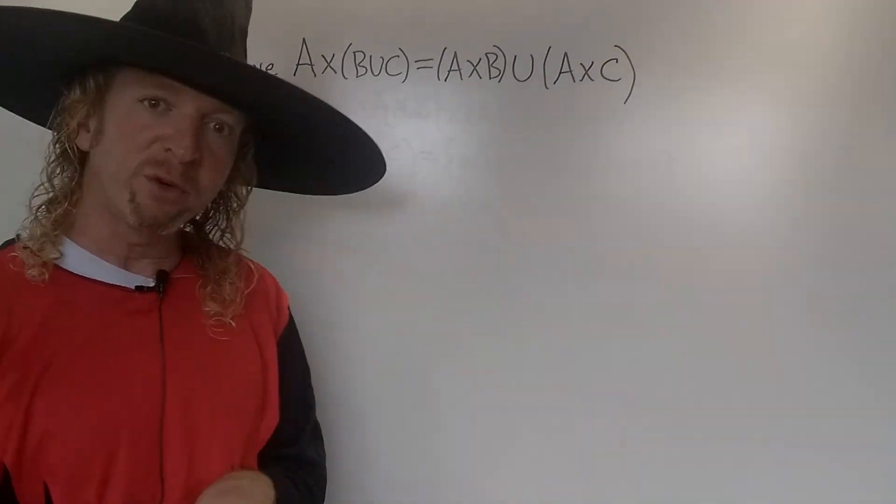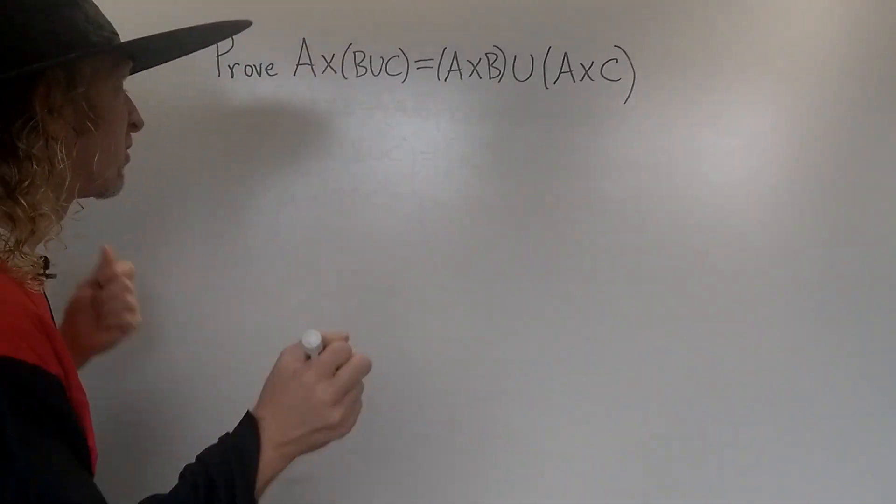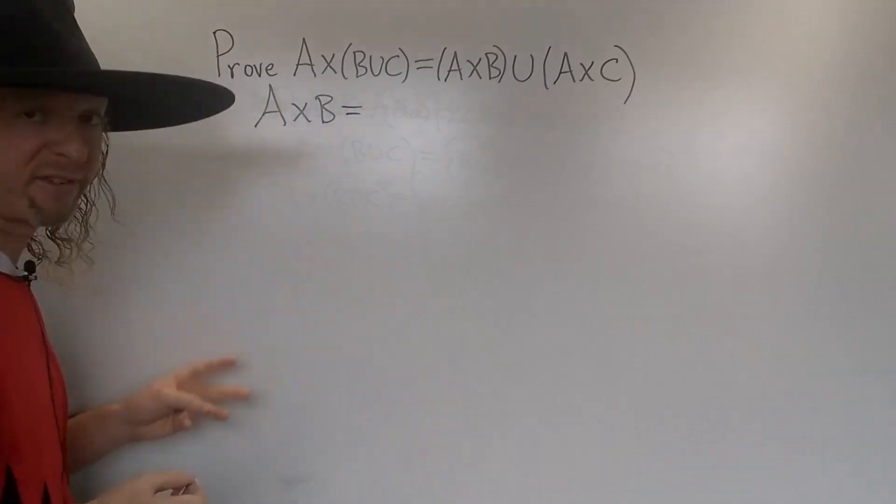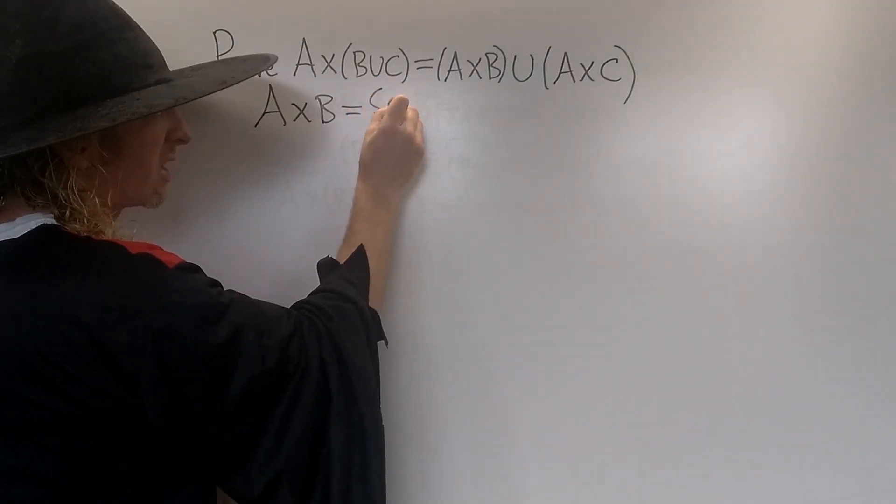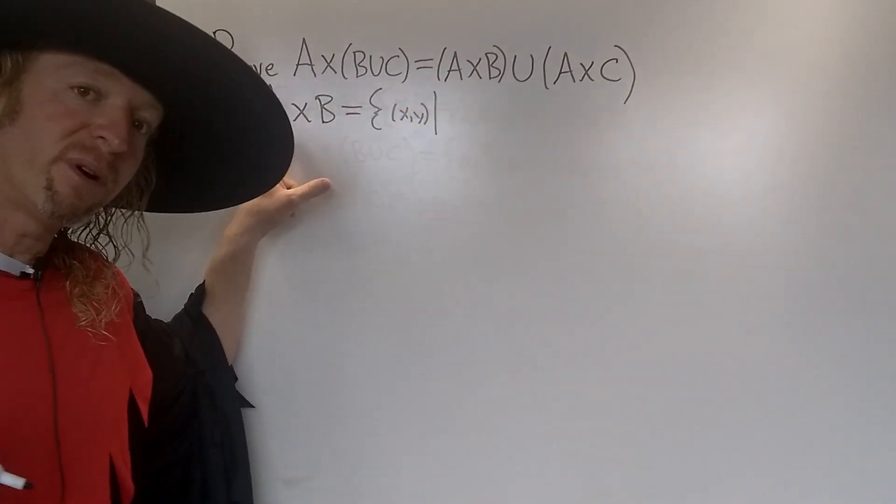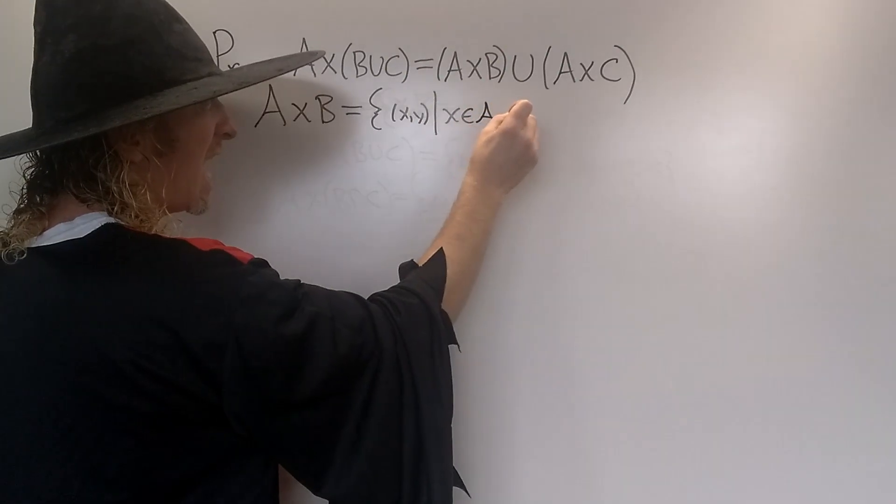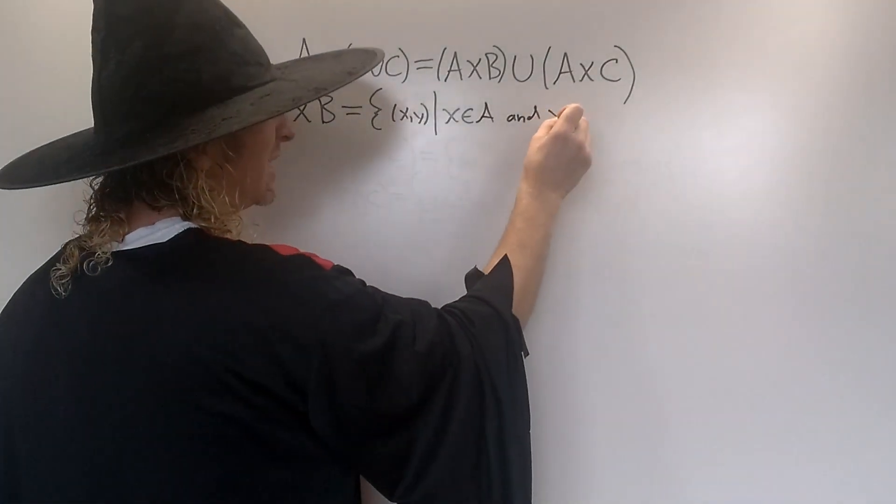So before we do the proof let's briefly recall what the × means. The × means Cartesian product. So if you have two sets A and B, the Cartesian product of A and B is defined as A×B. This is equal to the set of all ordered pairs (x,y) such that the first component comes from your A, so x∈A, and the second component comes from your B, so y∈B.